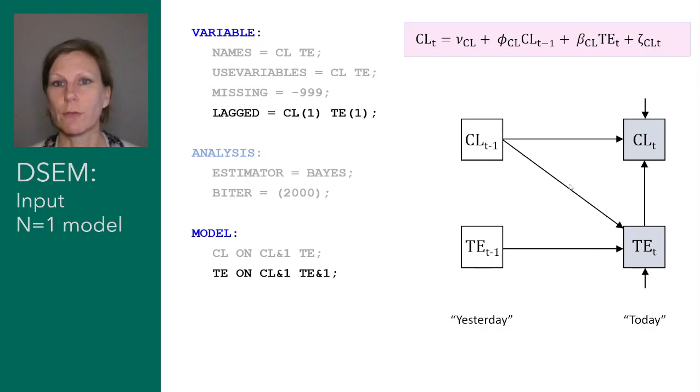This one again would be referred to as auto regression or inertia, and this one here going from one variable at t minus one to another variable at occasion t would be referred to as a cross-lagged regression, whereas this one here would be just a cross regression. It's not lagged because it's from a variable at t to another variable at occasion t.